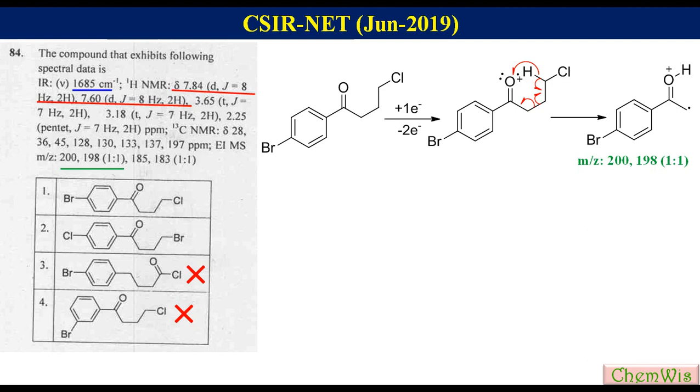This will undergo Maclafferty rearrangement like this to produce radical cation that will show peaks at M/Z 200 and 198 with 1 is to 1 intensity ratio due to the presence of bromine atom.